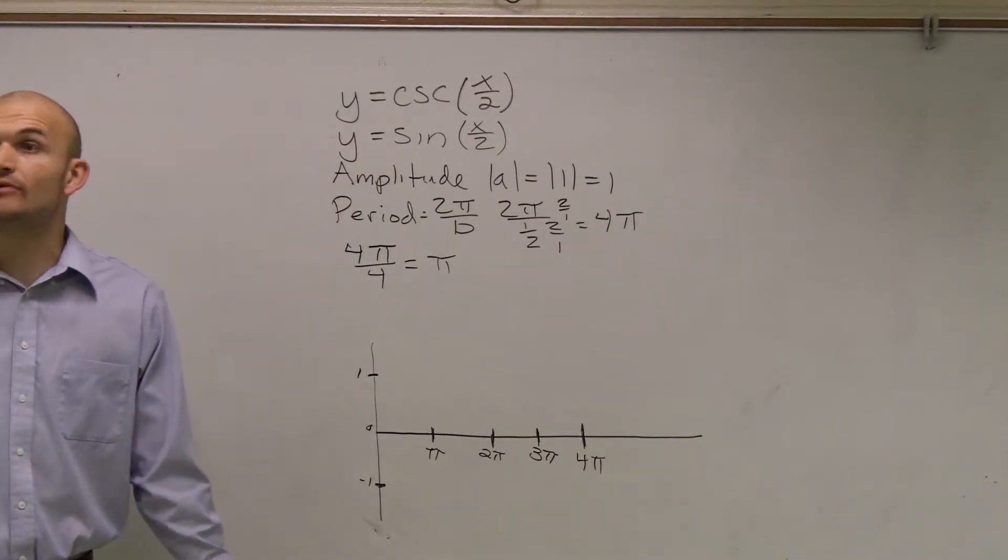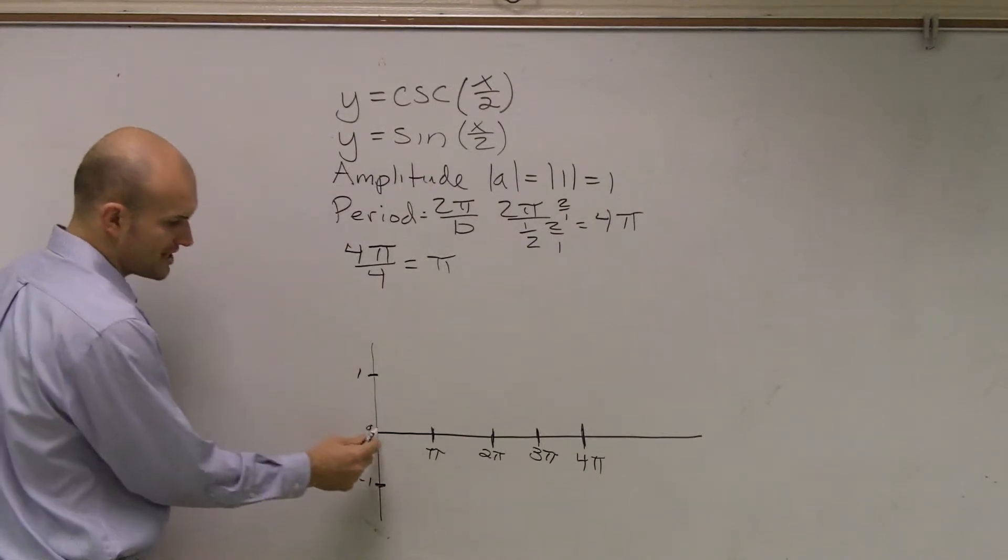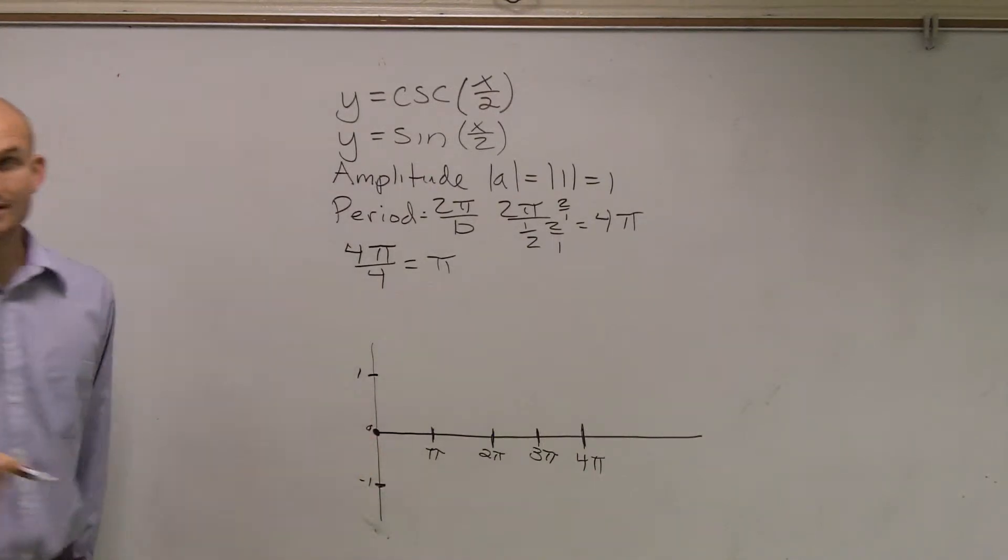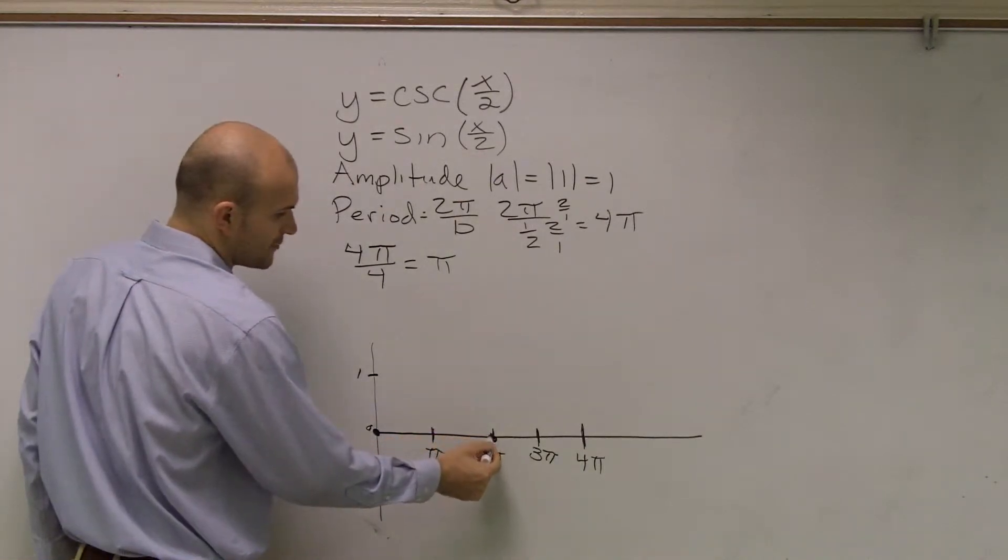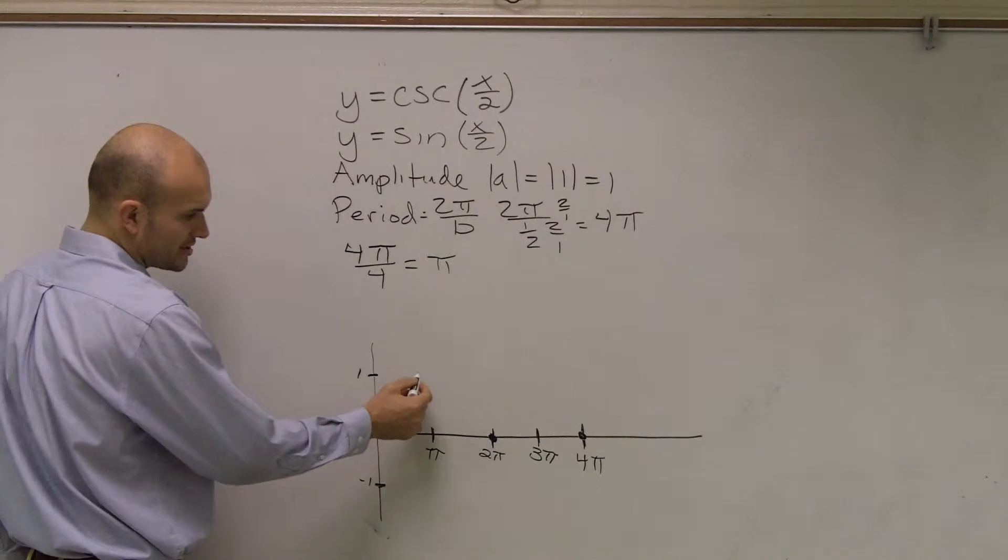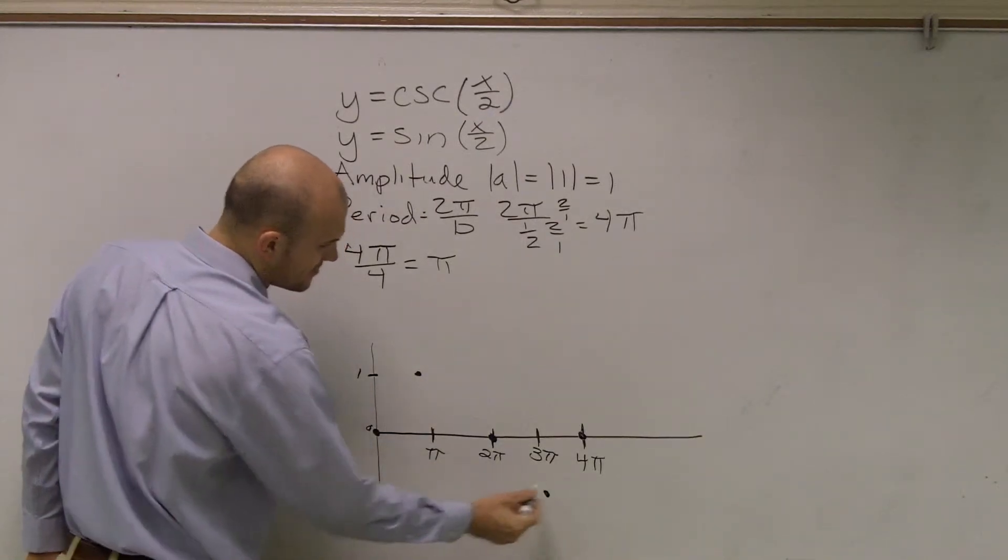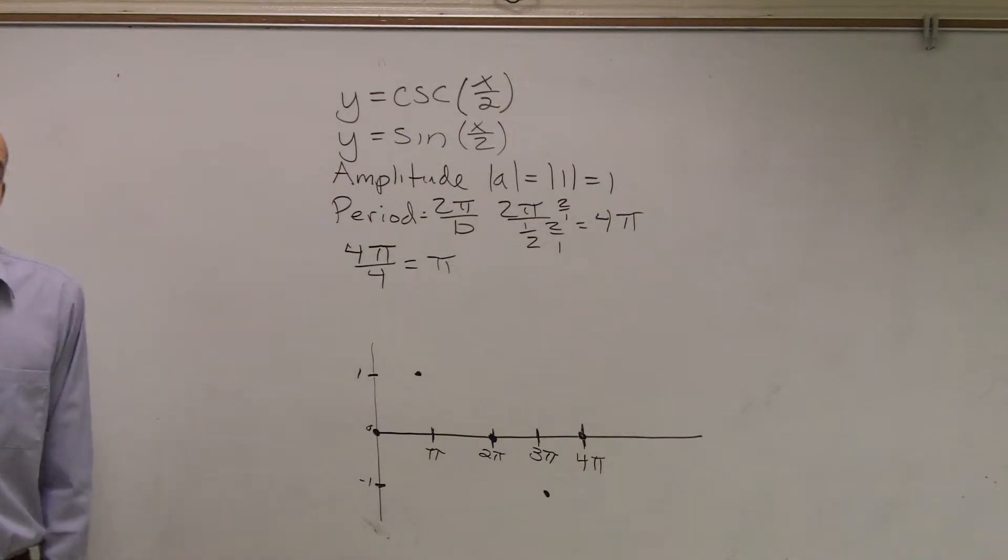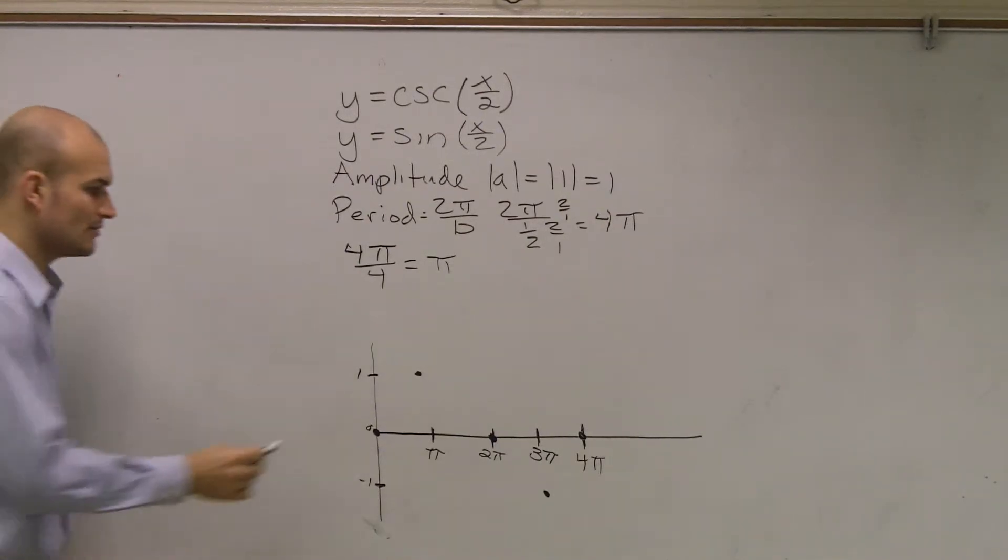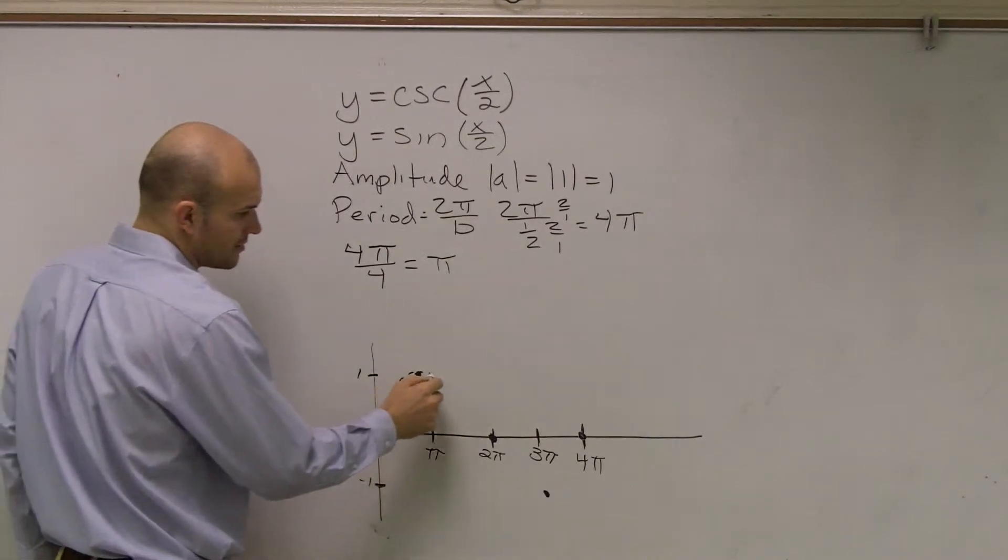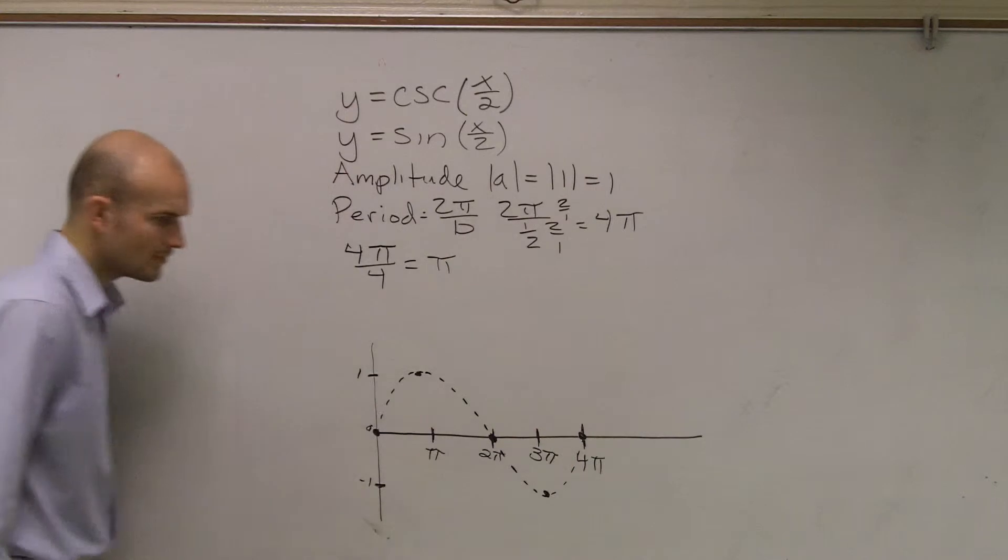So now I need to remember what does the sine graph look like. Well remember the sine graph, without any vertical or horizontal translation, crosses at 0 comma 0, and crosses halfway through its period, and it's going to end at a period. So here it's going to be our first maximum, and then here will be our first minimum. Now remember when doing this, we only just want to draw this graph very faintly, because we're not going to be using, the sine graph is not actually going to be a part of our graph.